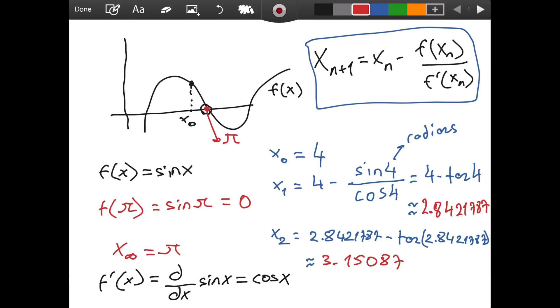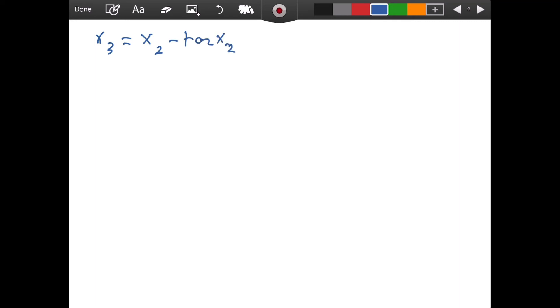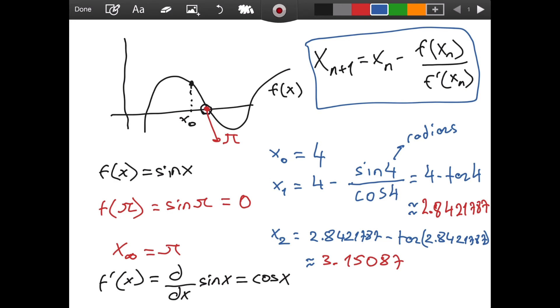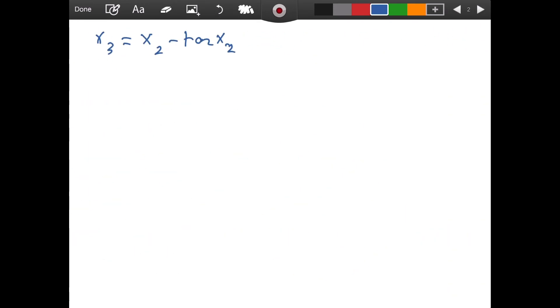So for x3 we will have x2 minus tangent of x2. And well, if you have tangent of x2, you will simply plug this in, right? I don't want to write and take up time, it is unnecessary really. If you do this, I am going to do it on my calculator. When I do that you get 3.1415